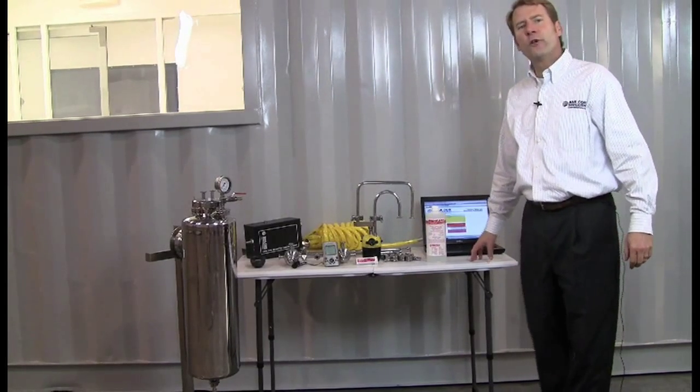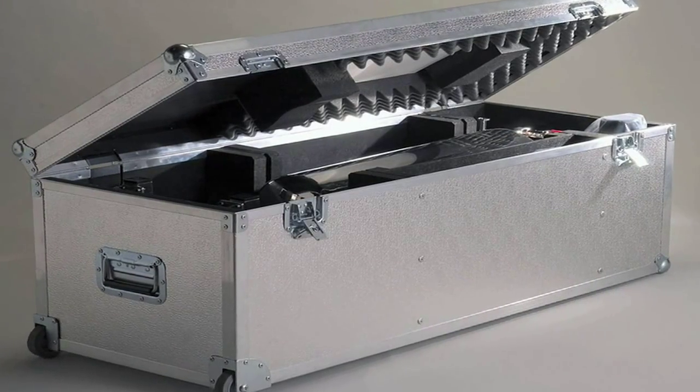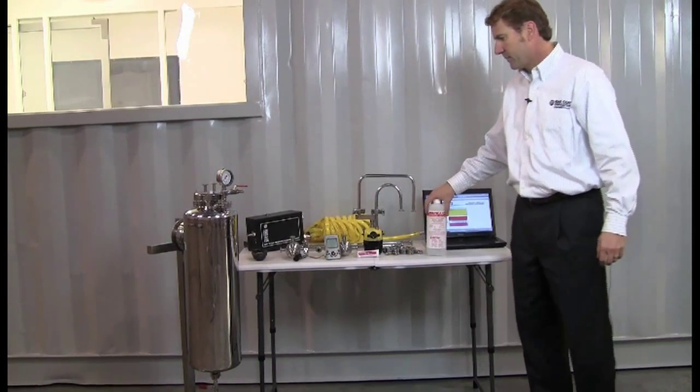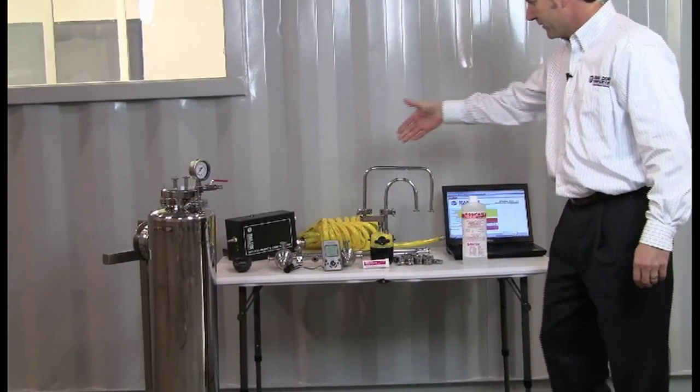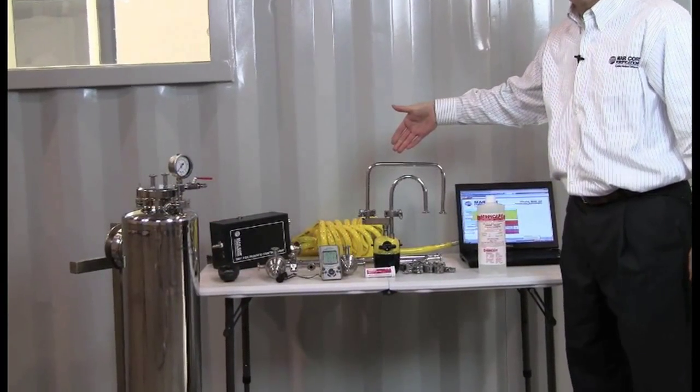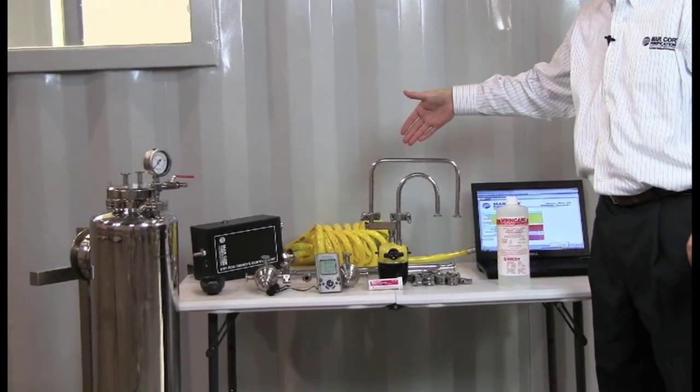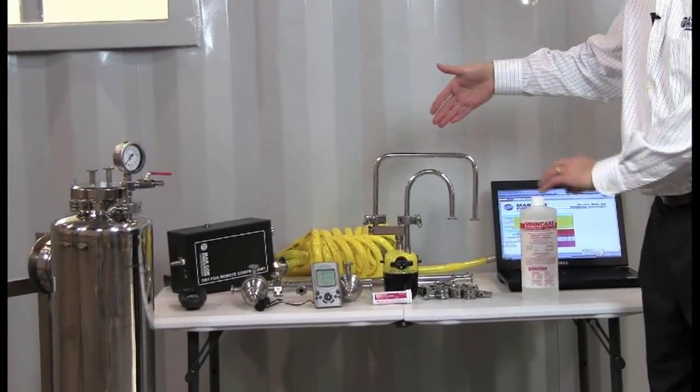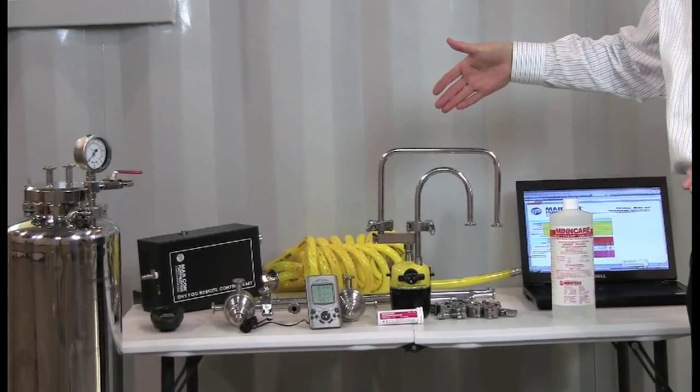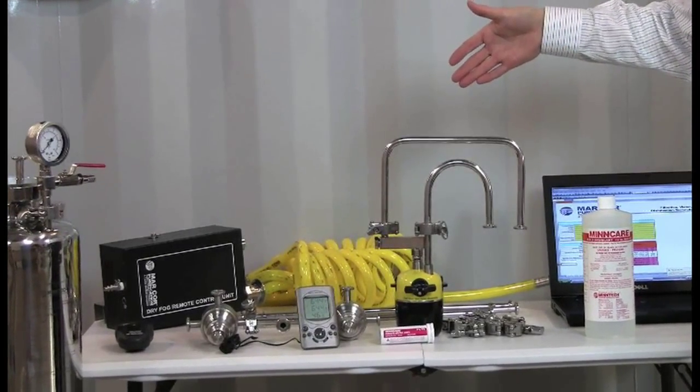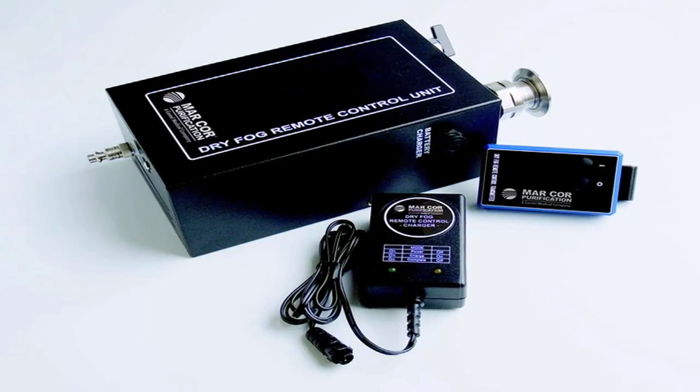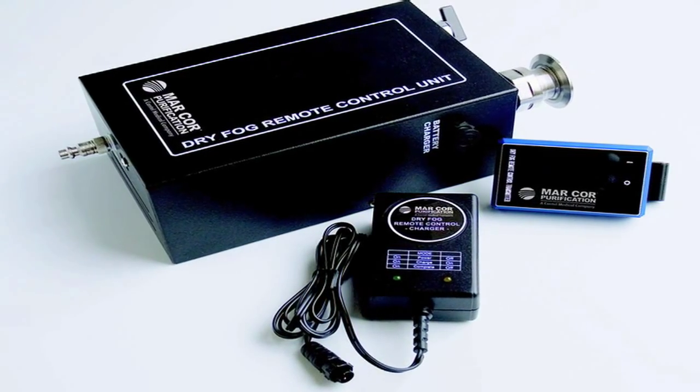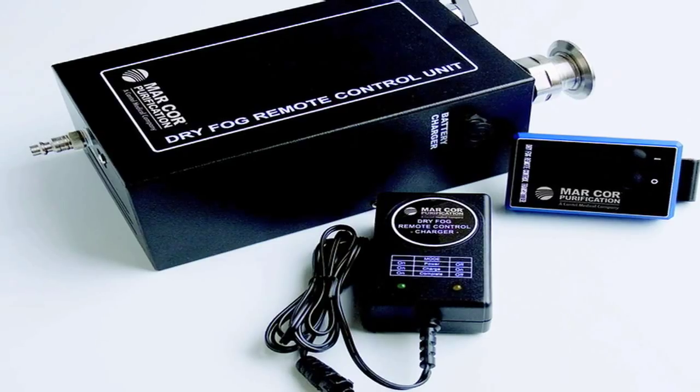These are the components to the Markor dry fog system. The Markor dry fog system utilizes MinCare that goes in the tank. This is the head, which is actually the heart of the unit that puts out the 7.5 micron droplet and gives you the ability to disinfect 35,000 cubic feet of clean room at one time.